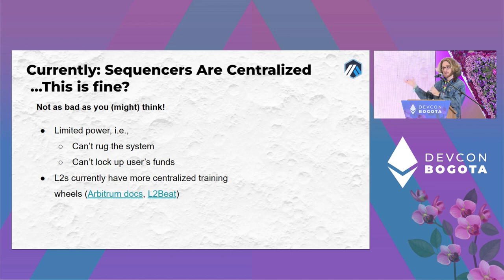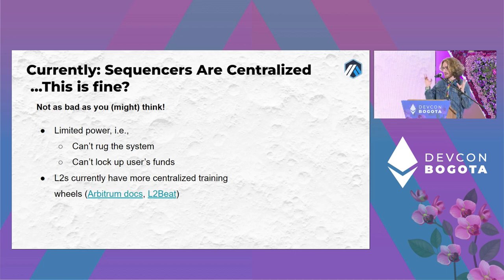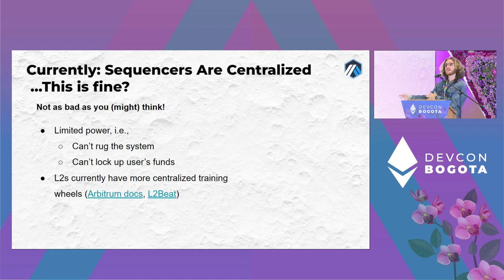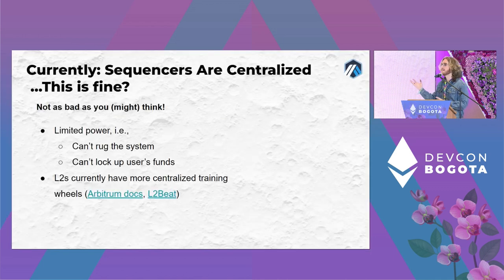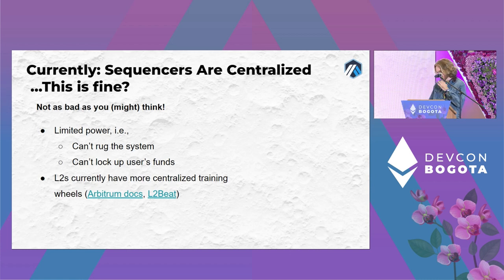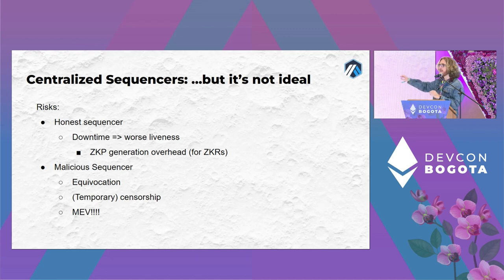The second point is that on just about every L2 — certainly Arbitrum in the current state — there are more fundamentally centralized parts. If we decentralized the sequencer without addressing those other things, it doesn't really give you much. Contract upgradability and the power validators have are the more important things. We don't want to mislead by emphasizing one thing over another.